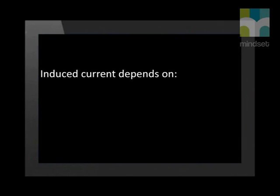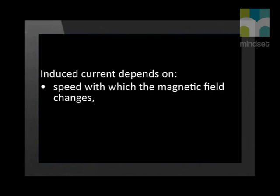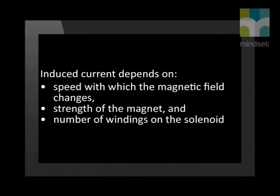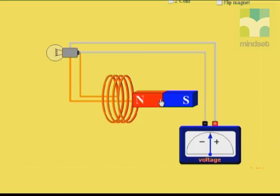The magnitude of the induced current is dependent on three factors: the speed with which the magnetic field changes relative to the conducting wire, the strength of the magnet, and the number of windings on the solenoid. We can prove this with a few simulation programs. In this demonstration, the brightness of the light bulb is an indication of the strength of the induced current.